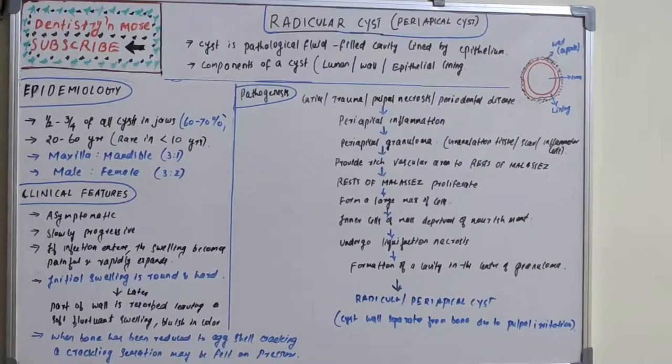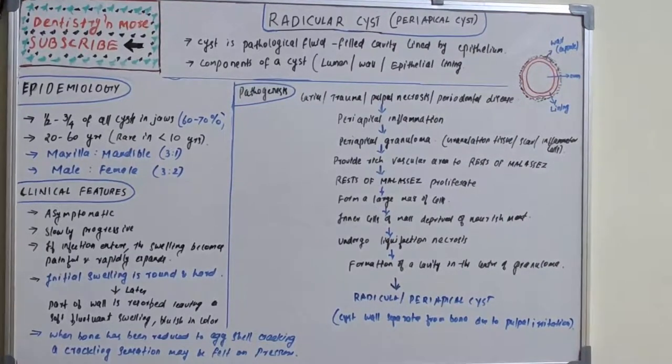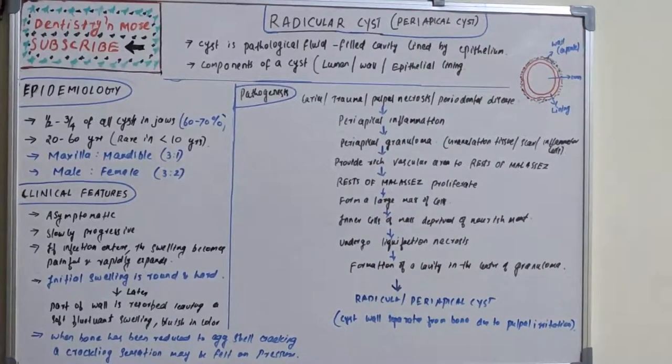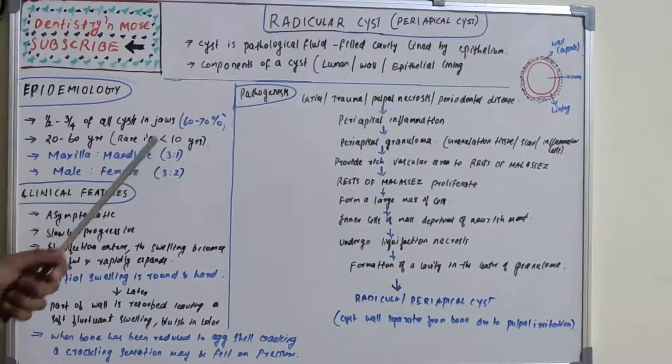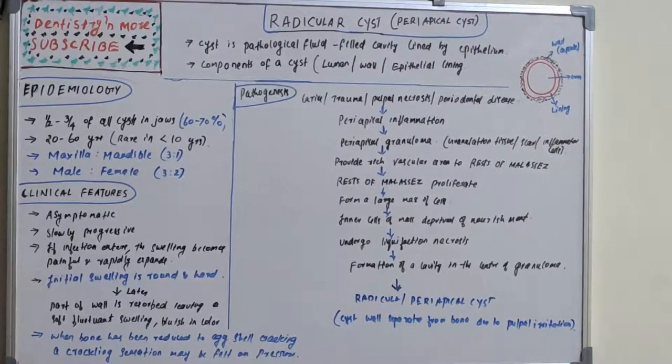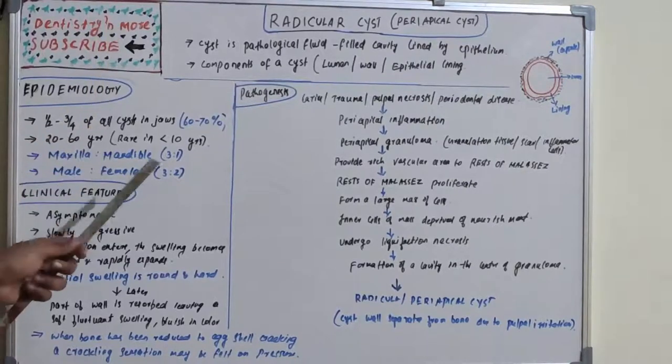In epidemiology, radicular cyst is one of the most common cysts of the jaw, accounting for 60 to 70 percent of cysts. It is most commonly seen between 20 to 60 years, and very rare less than 10 years. Maxilla is more affected because the porosity of maxillary bone is more favorable for cystic formation compared to mandible. Three to one ratio, meaning three times more lesions in maxilla. Male predilection with three to two ratio.